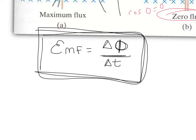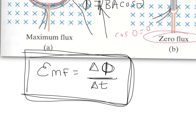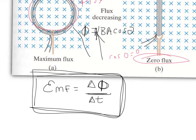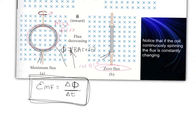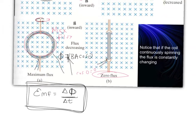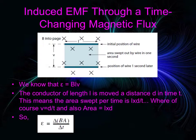A larger induced EMF is really just a larger voltage — a greater potential difference in our coil — and this is the principle by which generators work.